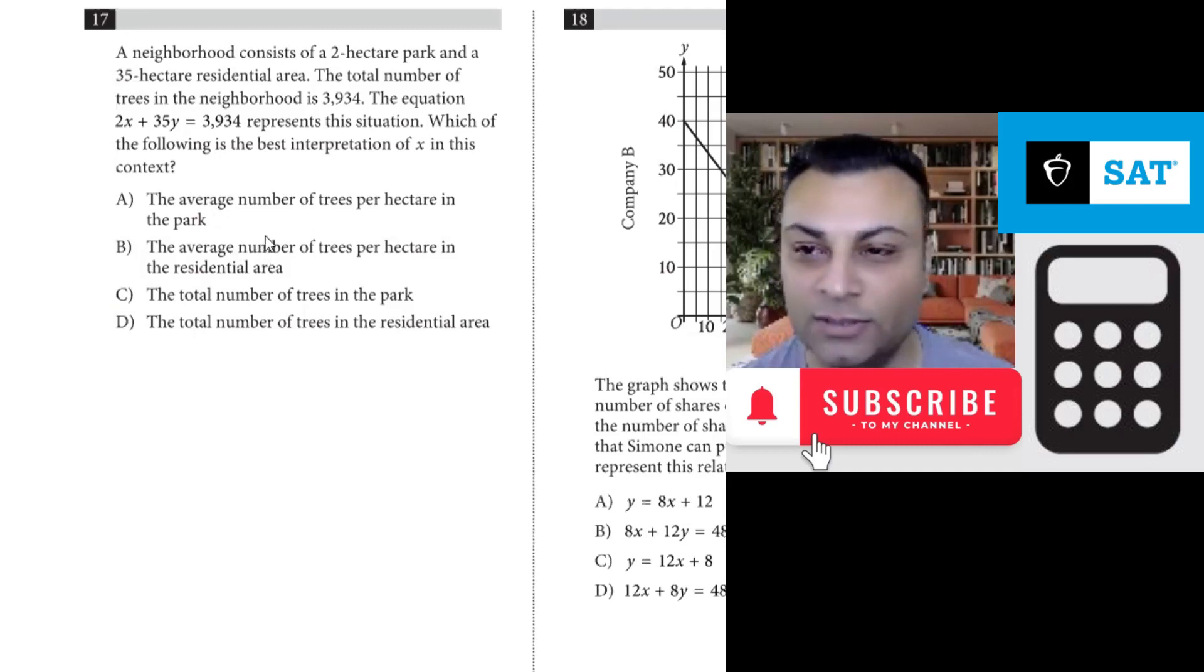Okay, question 17. A neighborhood consists of a 2-hectare park and a 35-hectare residential area. The total number of trees in the neighborhood is 3,934. The equation 2x plus 35y equals 3,934 represents this situation. Which of the following is the best interpretation of x in this context?